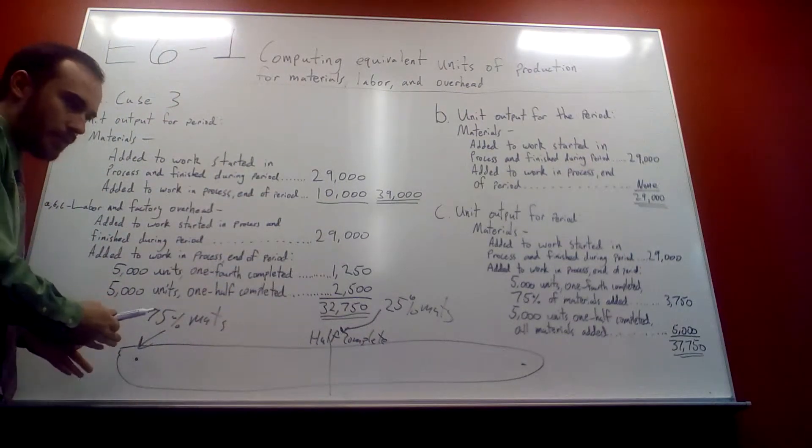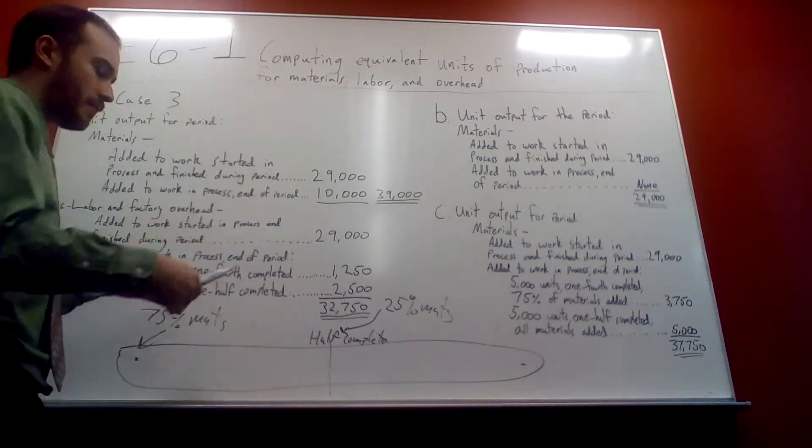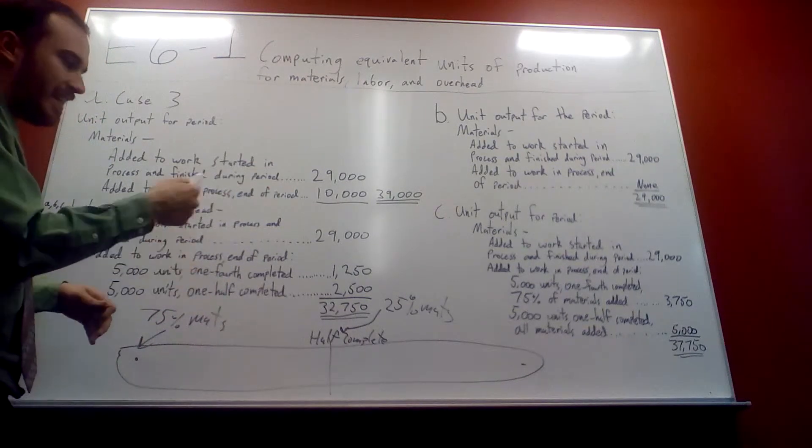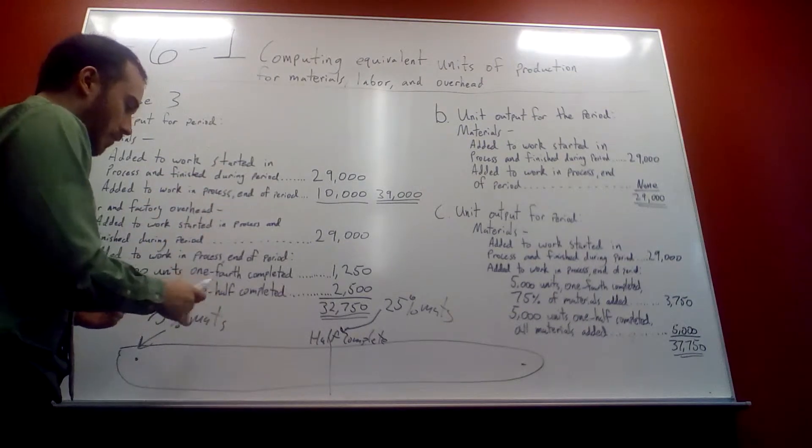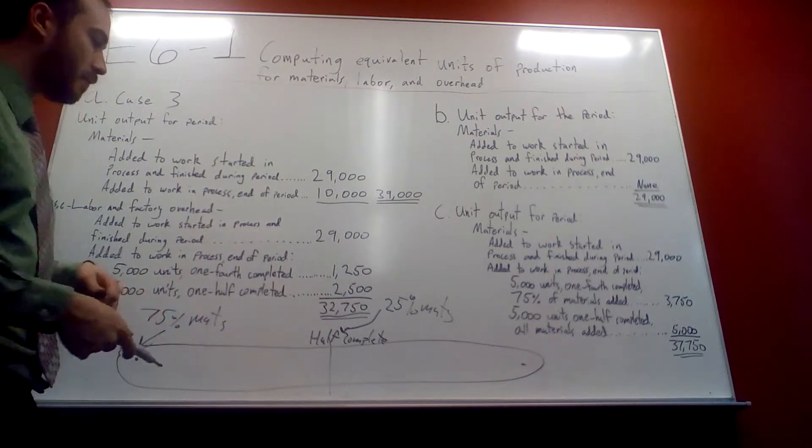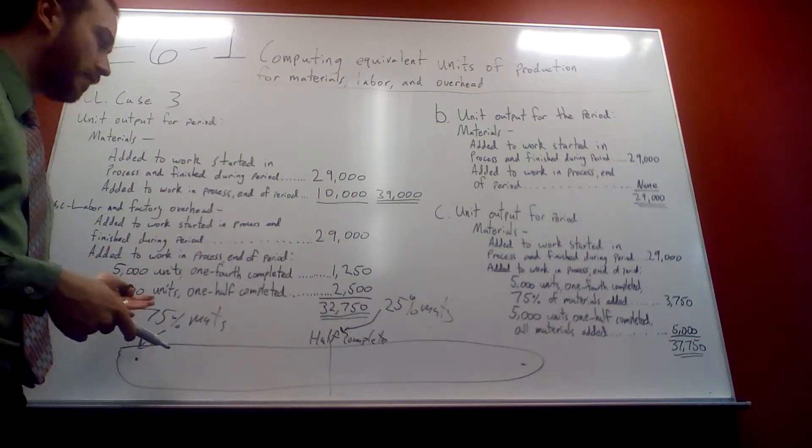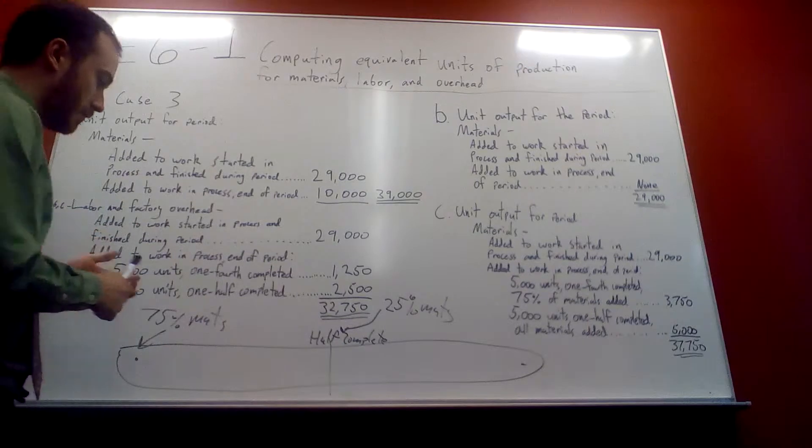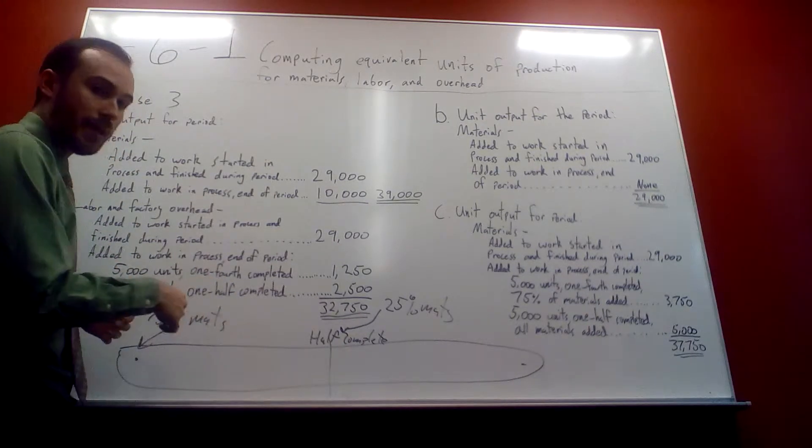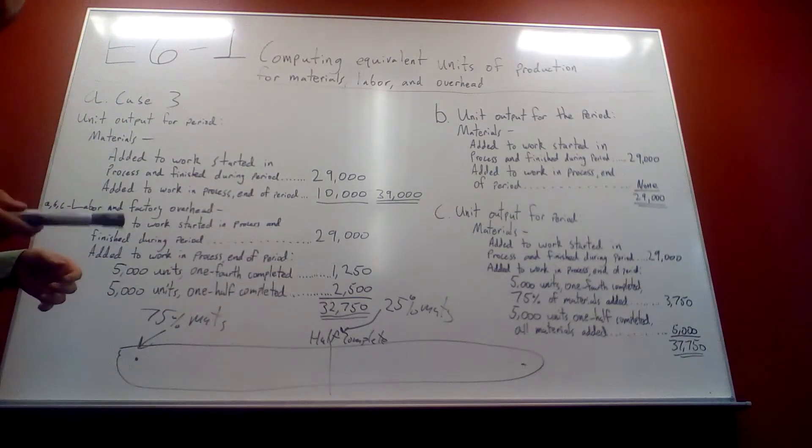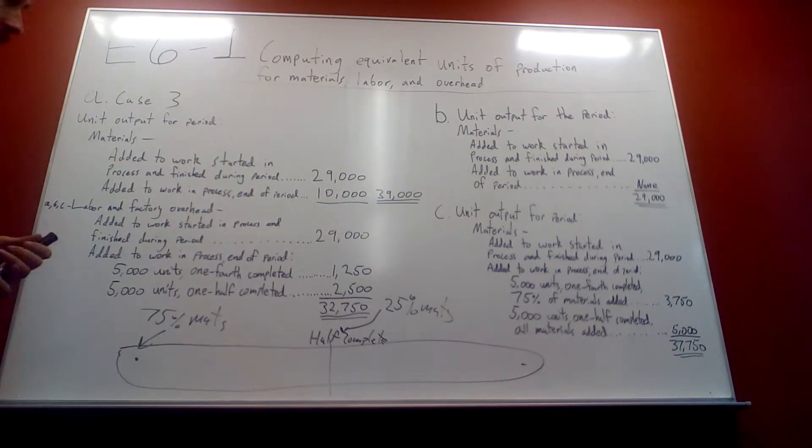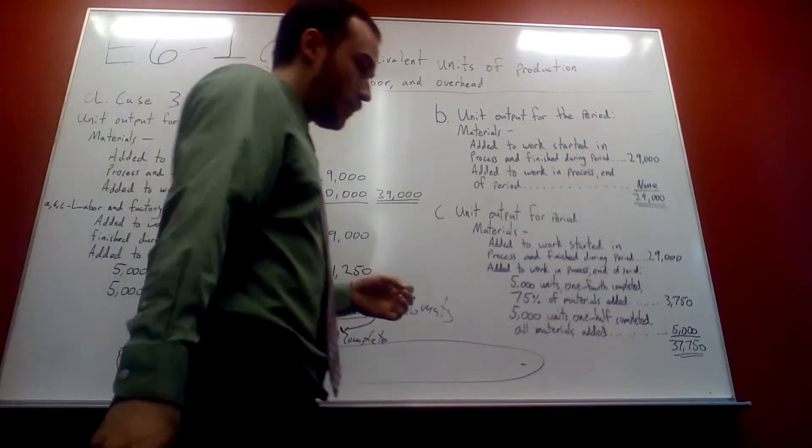So that's the visual. You can think of it as you're in a factory, it's a conveyor belt, you're adding different stuff in. And labor and overhead is added evenly. So it's almost like if it's one half complete, then it's one half complete as to overhead and factory overhead. So the evenly is very simple to grasp as whatever tells you how much is completed is exactly how much is completed as to factory overhead and labor.